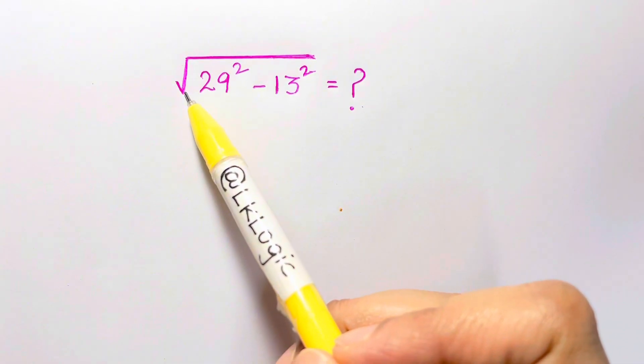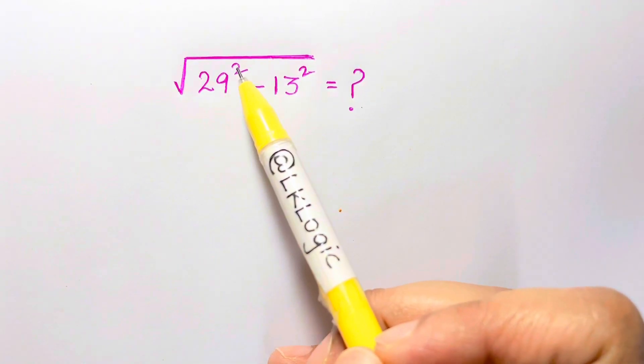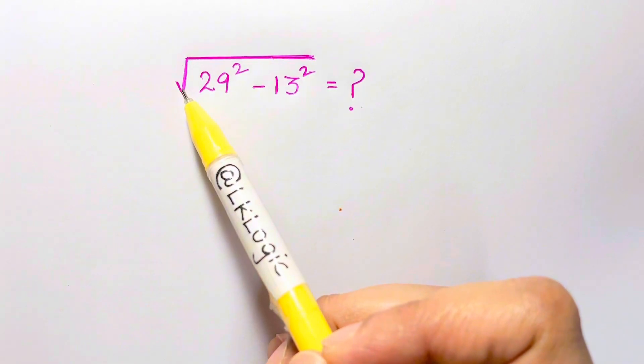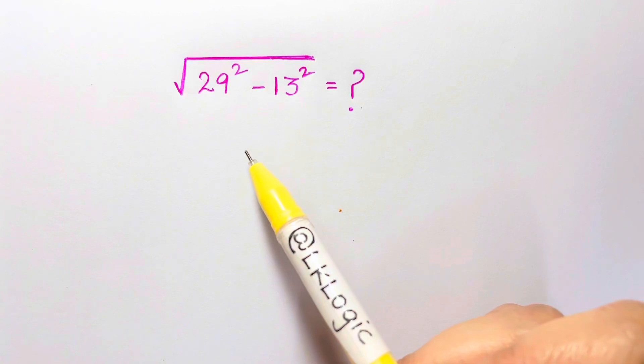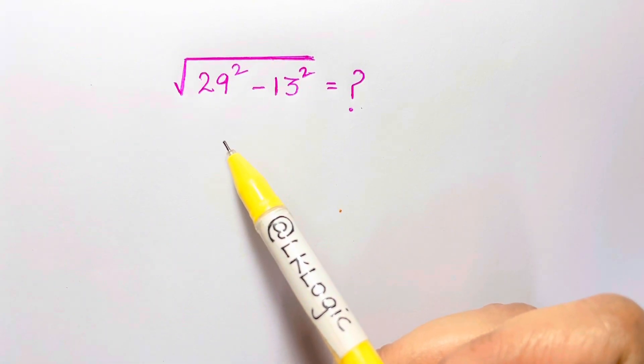Hi guys, here we have to solve a square root problem with squares inside: square root of 29 squared minus 13 squared equals what? You don't have to use your calculators, it's very simple and easy to solve this without calculators.